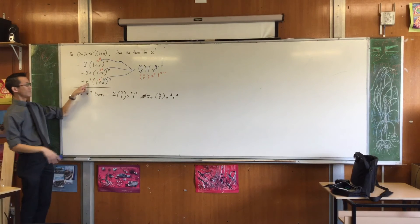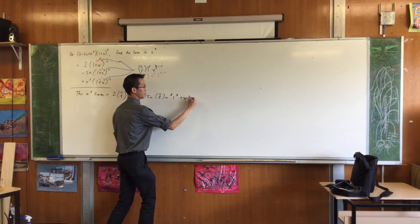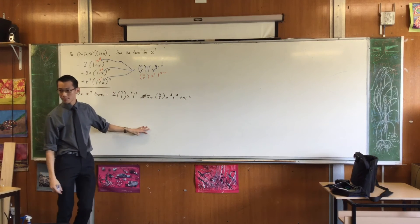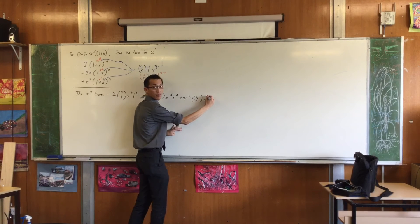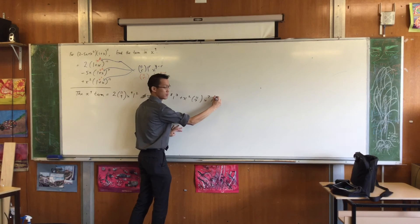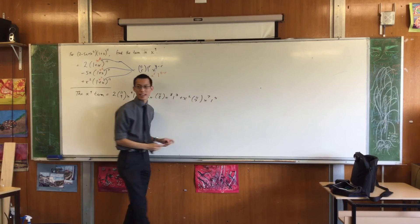Last one. Plus x squared. Okay, can you tell me what to write now? 11, c, 7, x to the 7, 1 to the 4. Okay, now clearly, I mean, we picked this so we didn't have to worry about the ones.